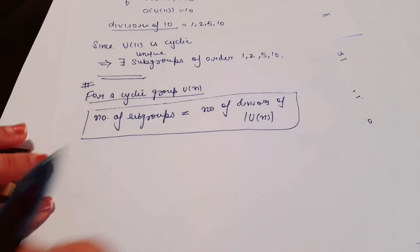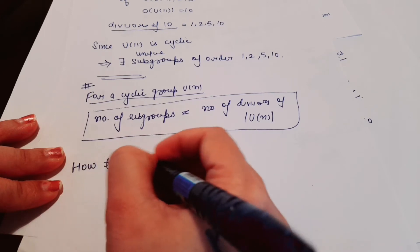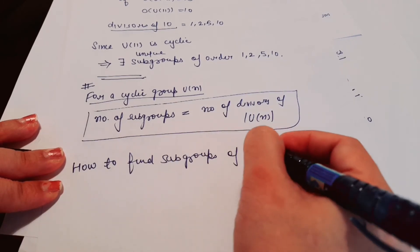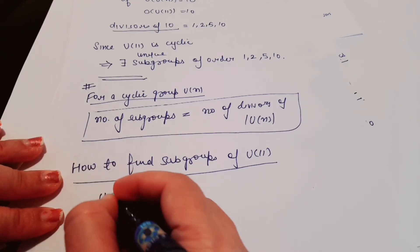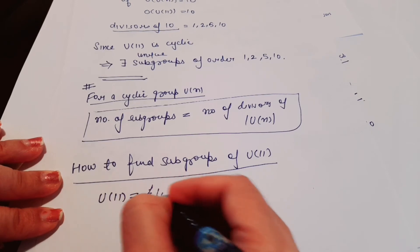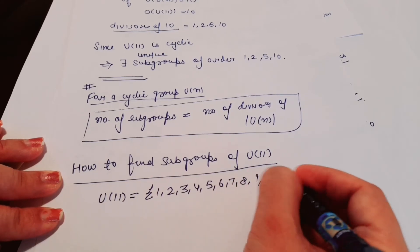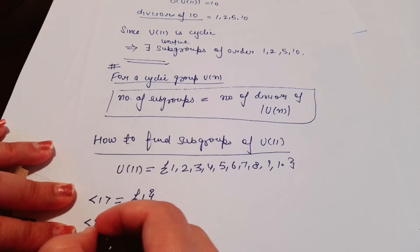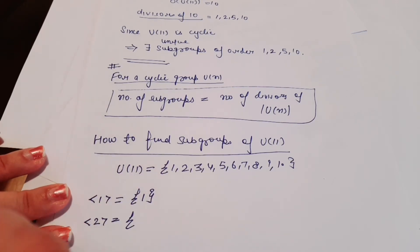Now we will see how to find these subgroups of U(11). We need to find the cyclic subgroups. The elements of U(11) are 1, 2, 3, 4, 5, 6, 7, 8, 9, 10. The cyclic subgroup generated by 1 is just {1}.